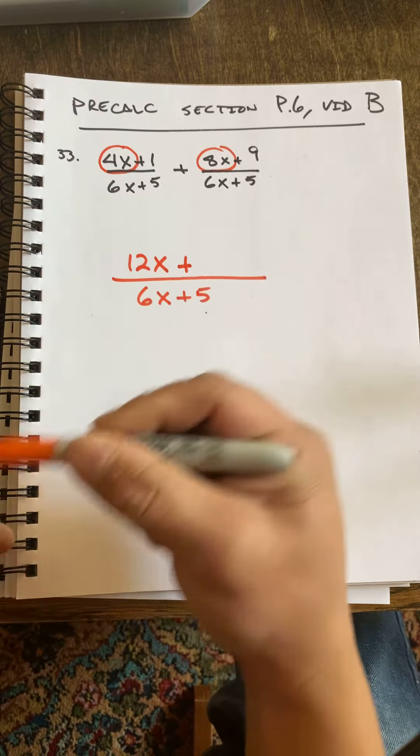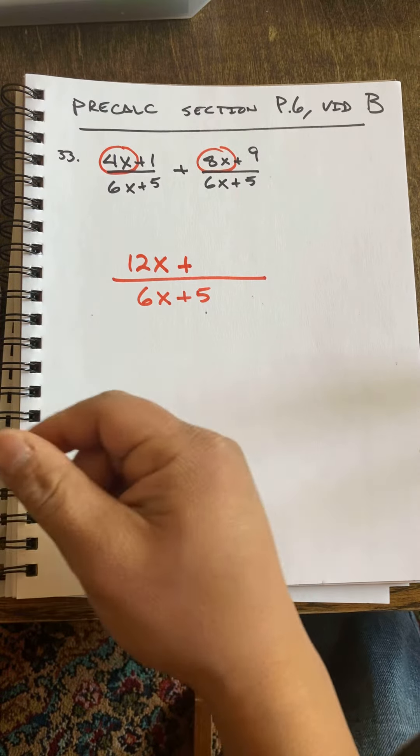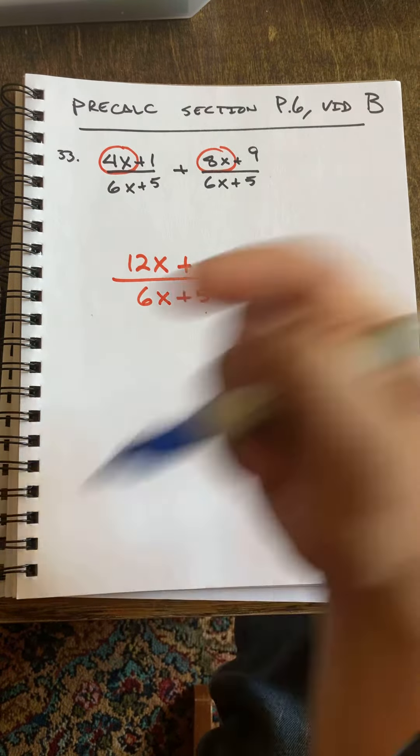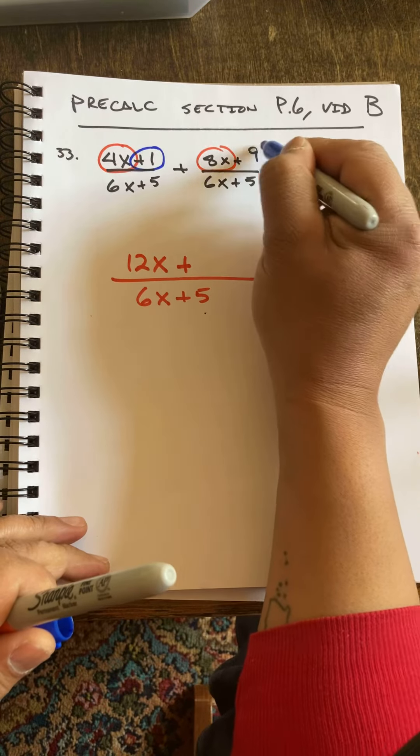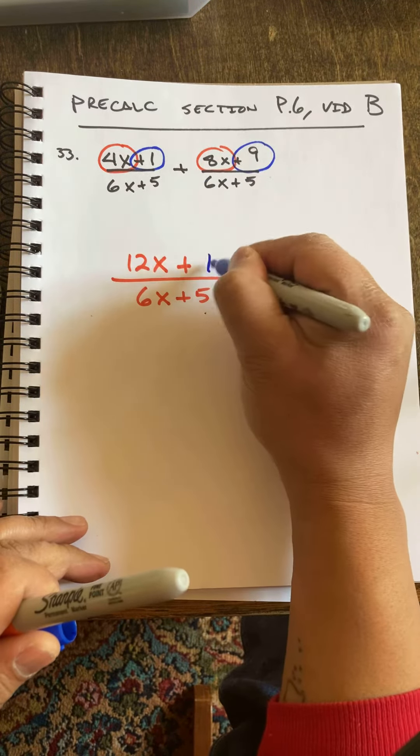plus, and I'll go blue. Here I have positive 1 plus positive 9, obviously is 10.